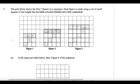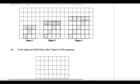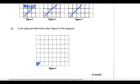Number 7. The grid shows the first 3 figures in a sequence. Each figure is made using small squares that are both colored and white (unshaded). For figure 4, looking at the pattern: figure 1 has 3 diagonals, figure 2 has 4, figure 3 has 5. So figure 4 would have 6, giving 6 columns and 6 rows of shading. All of this would be shaded there.